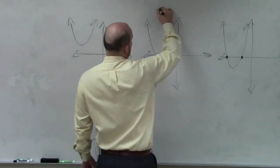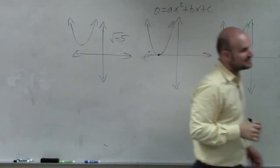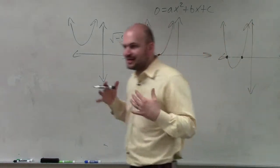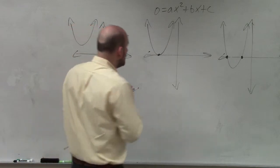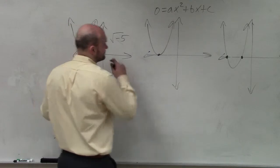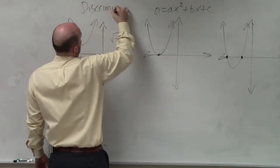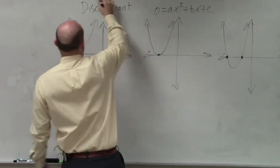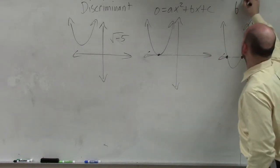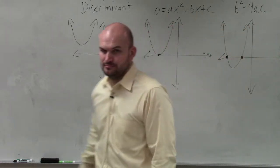So again, we need to look at, first thing we need to always make sure we have is a quadratic in our format of ax squared plus bx plus c equals 0. Whenever we have a quadratic that's in that format, what we can use is what we call the discriminant. And what the discriminant is, is basically a way for us to describe what type of solutions our quadratic has.